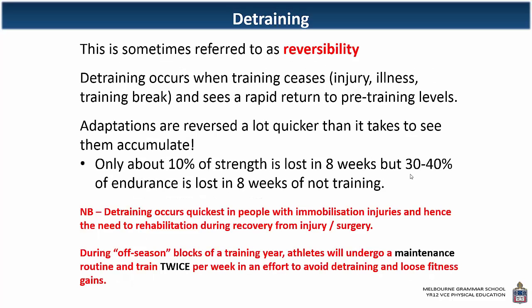Detraining — if you don't use it, you lose it. The key stat to focus on: only about 10% of strength is lost in eight weeks, but 30 to 40% of endurance is lost in eight weeks. So you lose aerobic adaptations faster than anaerobic adaptations — and that often surprises people. Anaerobic adaptations are not lost as fast as aerobic adaptations.